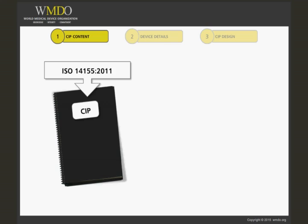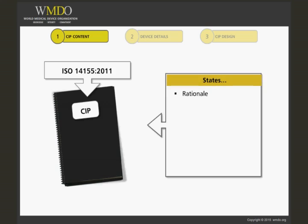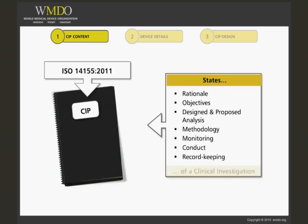According to the ISO 14155 standard, a Clinical Investigation Plan is a document that states the rationale, objectives, design and proposed analysis, methodology, monitoring, conduct and record-keeping of the clinical investigation. The definition provided in some countries' national laws and guidance documents may not be exactly the same, but are likely to differ only slightly, as a Clinical Investigation Plan would need to have all this detail, no matter which country you are conducting your clinical investigations in.